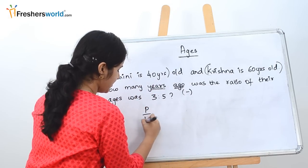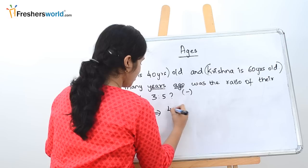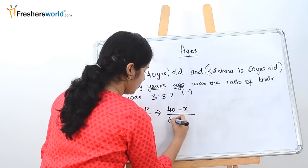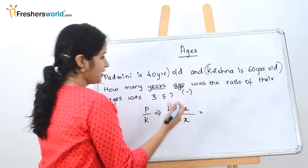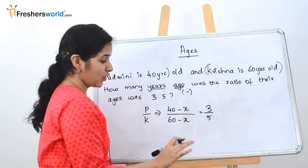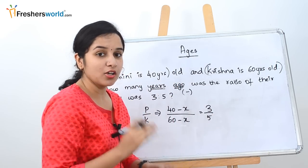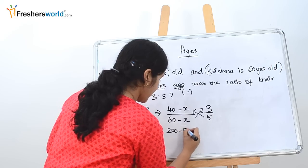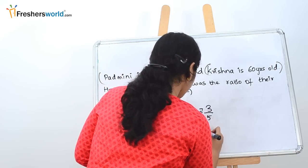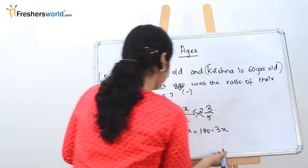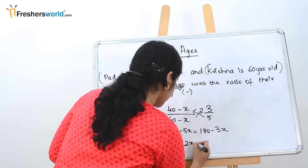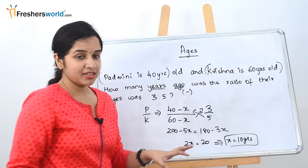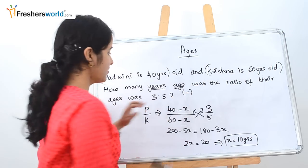So Padmini divided by Krishna is: Padmini's age was (40 − x) and Krishna's age was (60 − x), and their ratio was 3 to 5. Just cross multiply: 5(40 − x) = 3(60 − x), which gives 200 − 5x = 180 − 3x. Moving terms: 2x = 20, so x = 10 years. Therefore, 10 years ago their ratio of ages was 3 to 5.